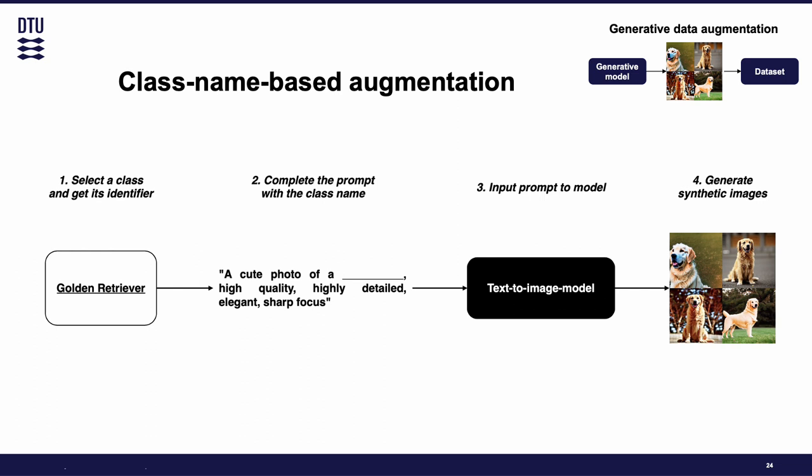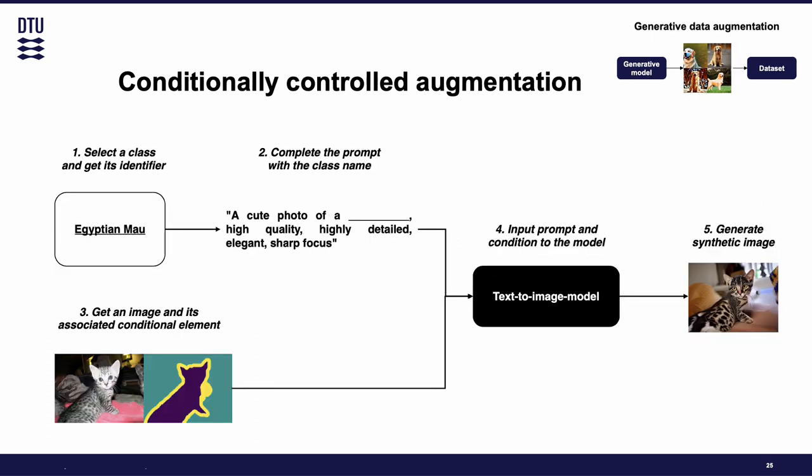Both Dreambooth and Textual Inversion strategies allow the pipeline to be generalistic. However, they are a complex approach that requires customizing a text-to-image model for each one of the classes. For this purpose, we have developed the class name-based augmentation method, which takes the class identifier and builds a prompt with it, allowing the text-to-image model to generate images for the same class. But the image generation model may not have enough information to generalize images of certain classes. A challenge also arises when aiming to control the generated images for tasks such as segmentation, since generating subjects with specific poses or arrangements becomes really difficult. The solution is to use ControlNet to condition the text-to-image model with conditional elements — in this case, segmentation maps and keypoint detections.